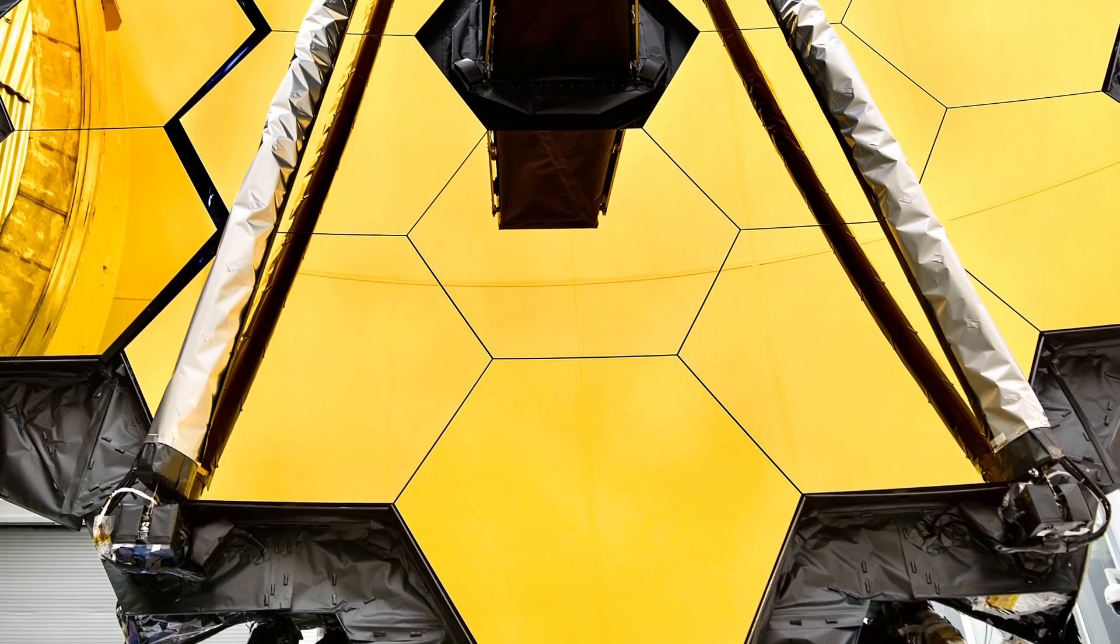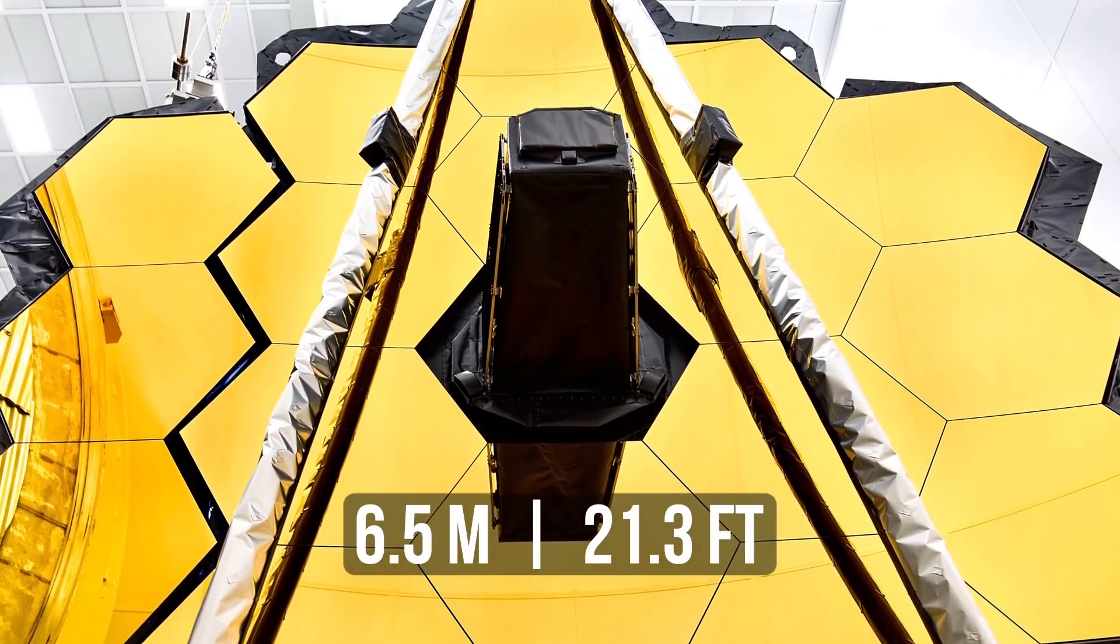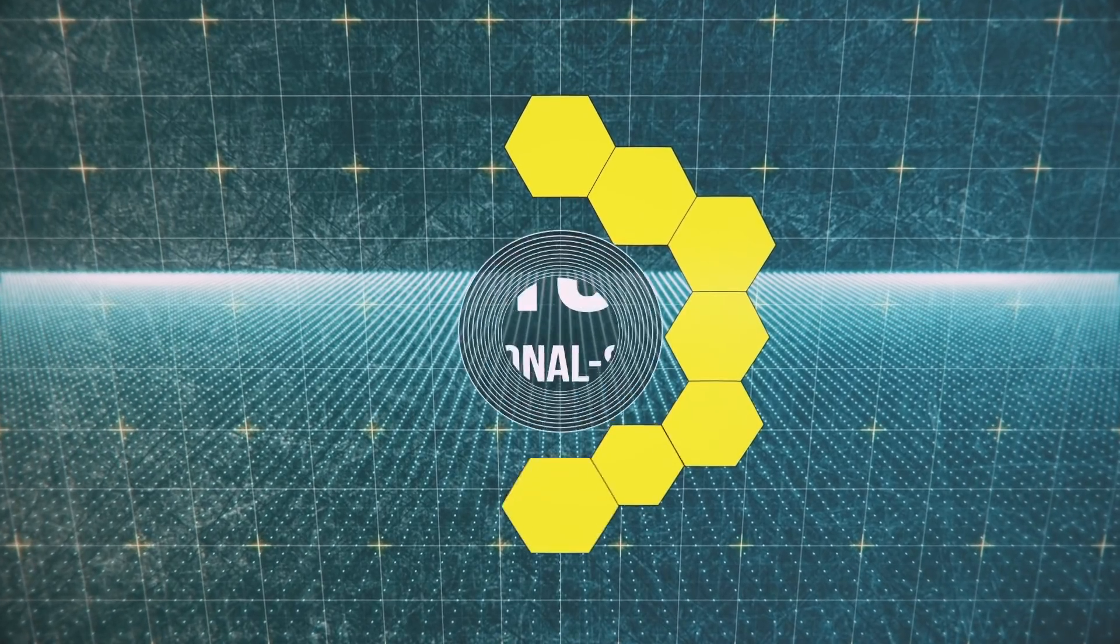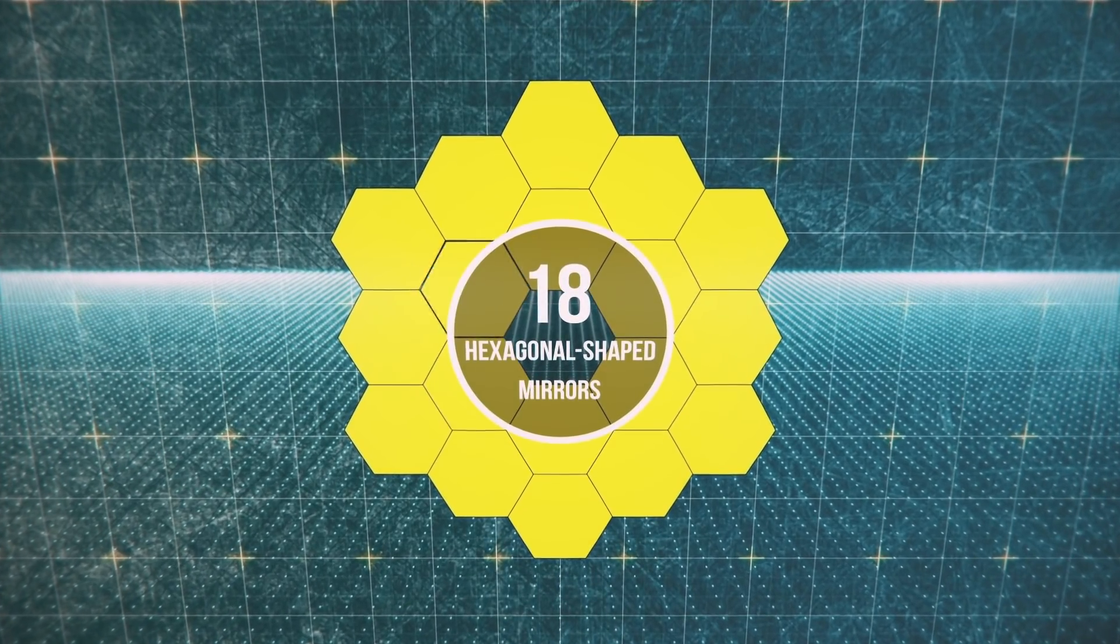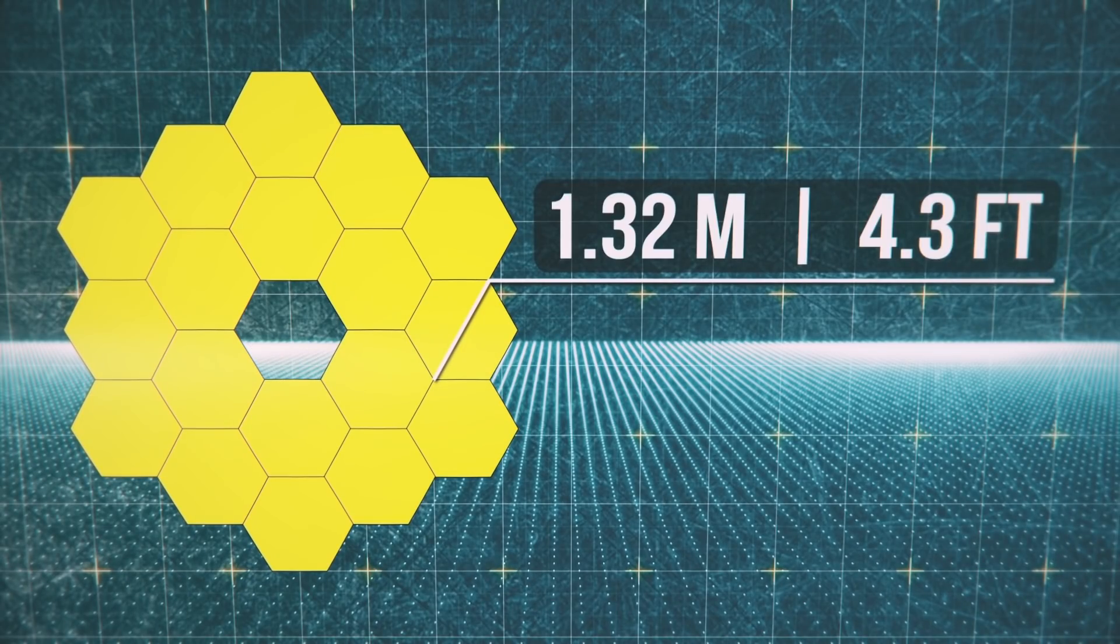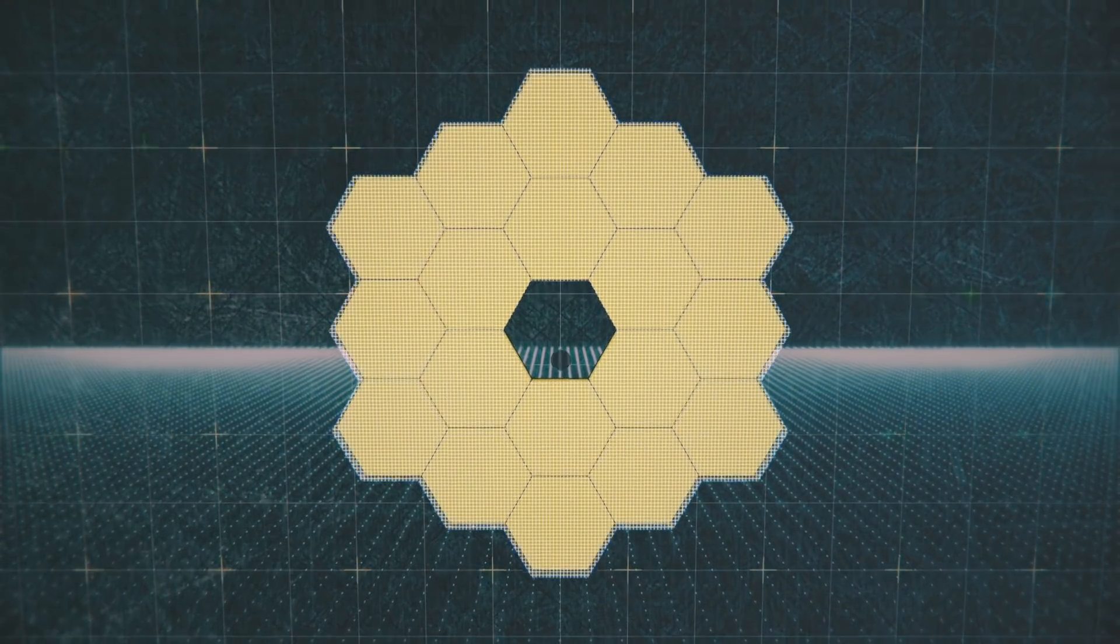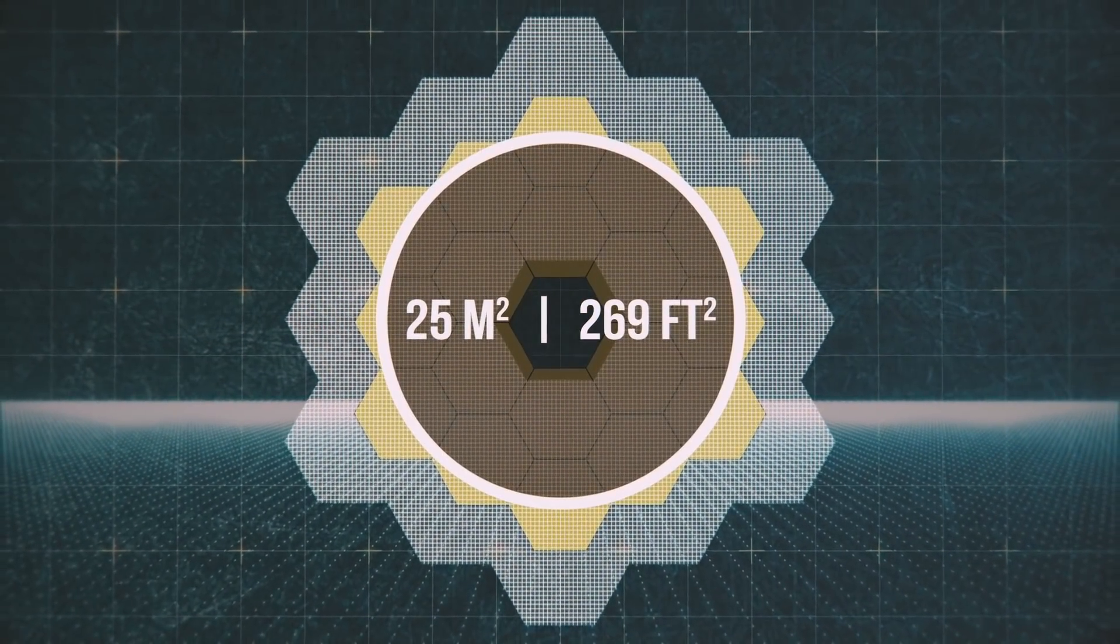So first off, how is the James Webb Space Telescope constructed? Well, the main advantage of the Webb is its segmented mirror, which has a diameter of six and a half meters. It's made of 18 hexagonal shaped mirror segments, each almost a meter and a half in diameter. The total light collecting surface area of the mirror is 25 square meters.